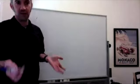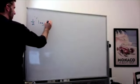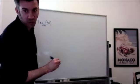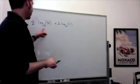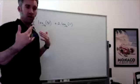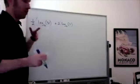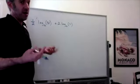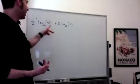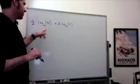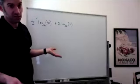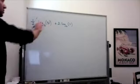Now evaluate: one-half log base six of 81 plus two times log base six of two. Note that neither log base six of 81 nor log base six of two can be simplified directly because six and 81 don't share a common base — 81 is three to the fourth, but six is not a power of three.